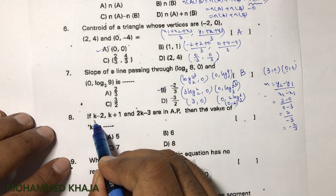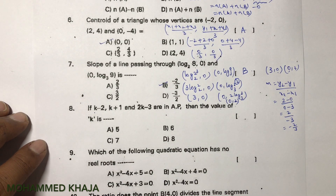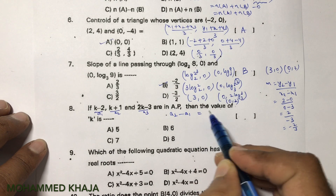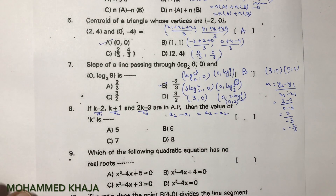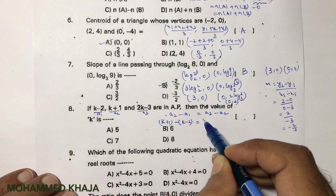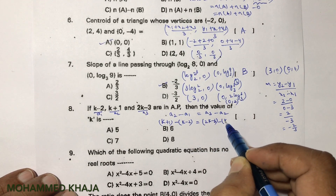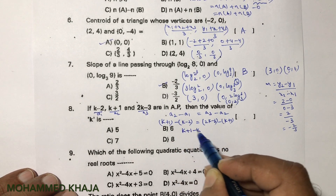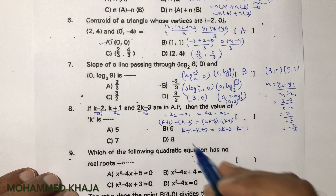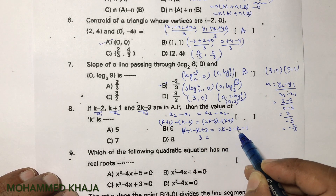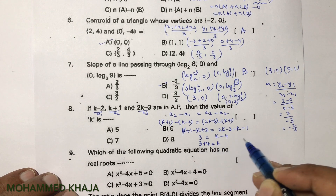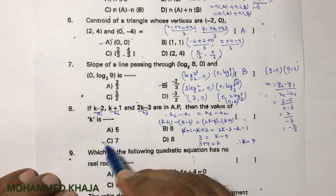Next: finding k for three terms of an AP. Using the condition a2 − a1 = a3 − a2: (k+1) − (k−2) = (2k−3) − (k+1). Simplifying the left side: k+1−k+2 = 3. Right side: 2k−3−k−1 = k−4. So 3 = k−4, which gives k = 7. The correct option is C.